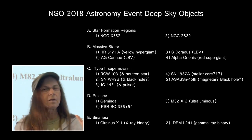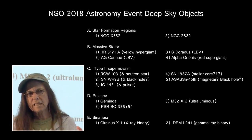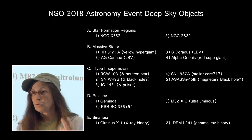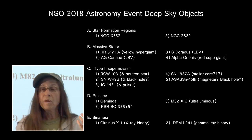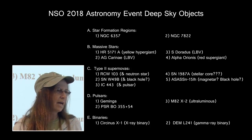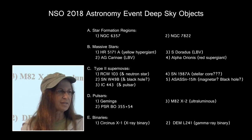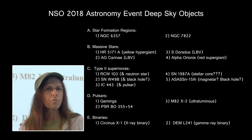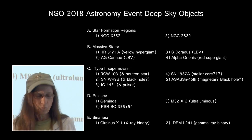Now, let's look again at the deep sky objects for 2018. We have two star formation regions. We have those four massive stars. We have the five Type II supernovas. We have three different pulsars. So, let's add them to the sequence now.